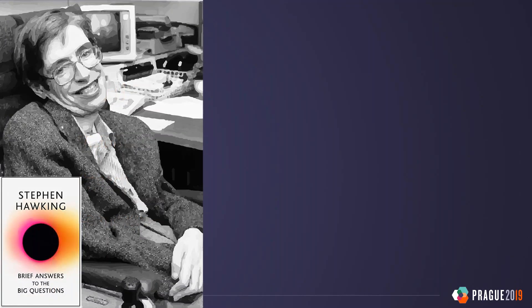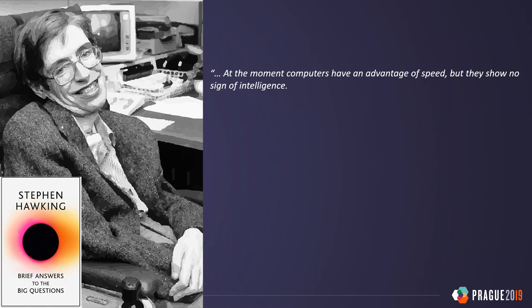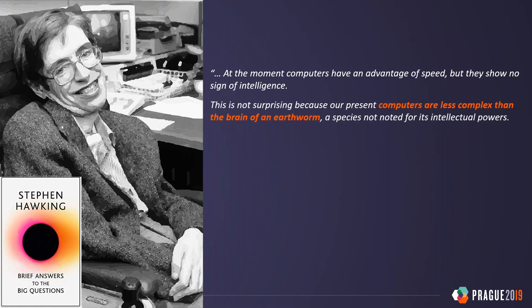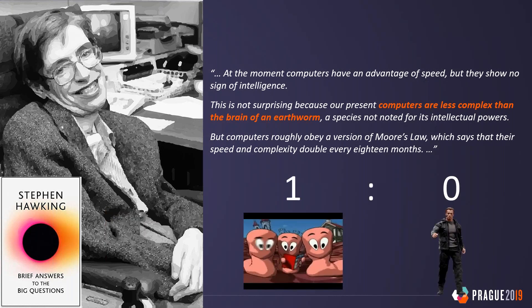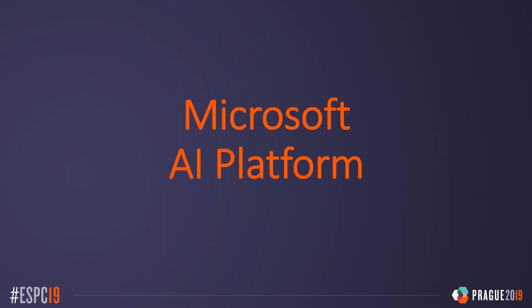It's a good idea to read up on AI. In his latest book, Stephen Hawking has a whole chapter on artificial intelligence, defining that at the moment computers have the advantage of speed but show no sign of intelligence. He compares a computer to an earthworm, saying a computer is less complex than the brain of an earthworm right now. But computers have Moore's Law — every 18 months they double their computational power. His thinking was that in 200 to 300 years computers will be as powerful as our own brain. So right now: earthworms one, Terminator zero.